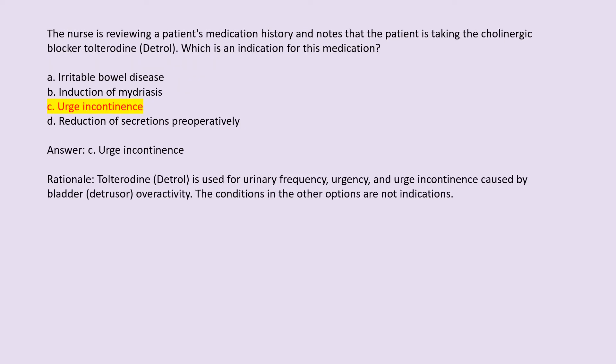Answer: C. Urge incontinence. Rationale: Tolterodine (Detrol) is used for urinary frequency, urgency, and urge incontinence caused by bladder detrusor overactivity. The conditions in the other options are not indications.